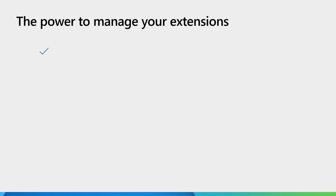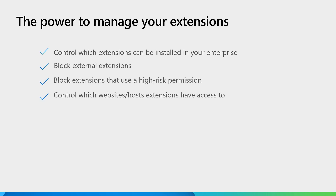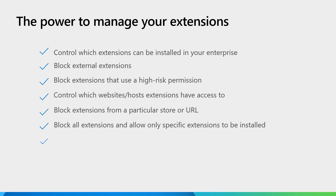Microsoft Edge provides the power to manage extensions in your enterprise. You can control which extensions can be installed, block external extensions, and block extensions that use high-risk permissions. You can control which websites a host extension has access to — that's very helpful if you want to restrict extensions from accessing websites that have data crucial to your organization. You can block all extensions and allow only specific ones, use an allow list policy to decide which extensions are permitted, or block specific extensions and let users install the rest. Organizations also use the force install policy to install extensions to all users or to specific security groups.